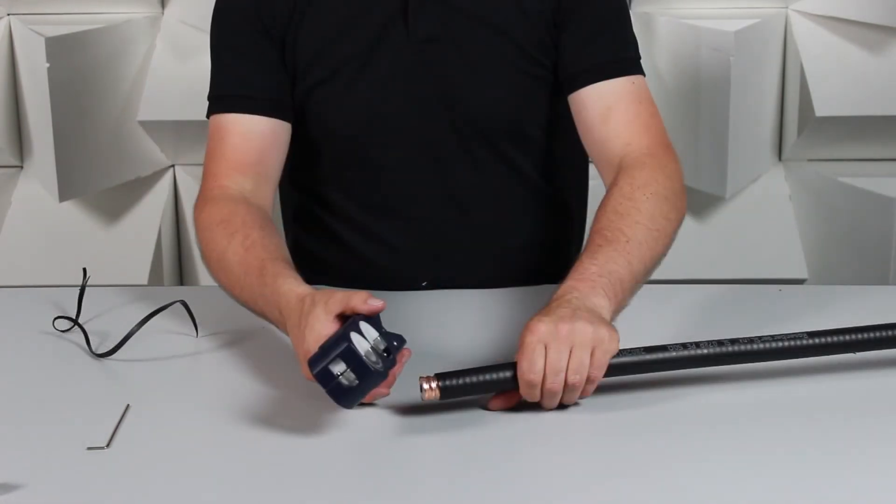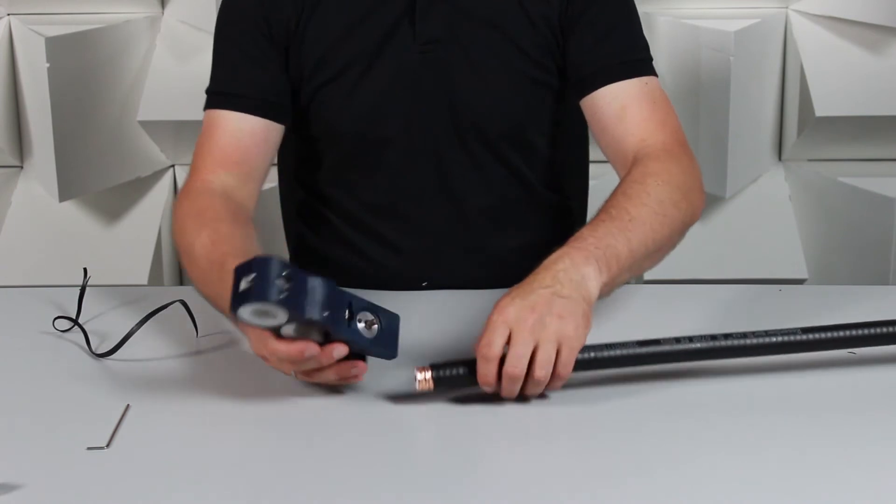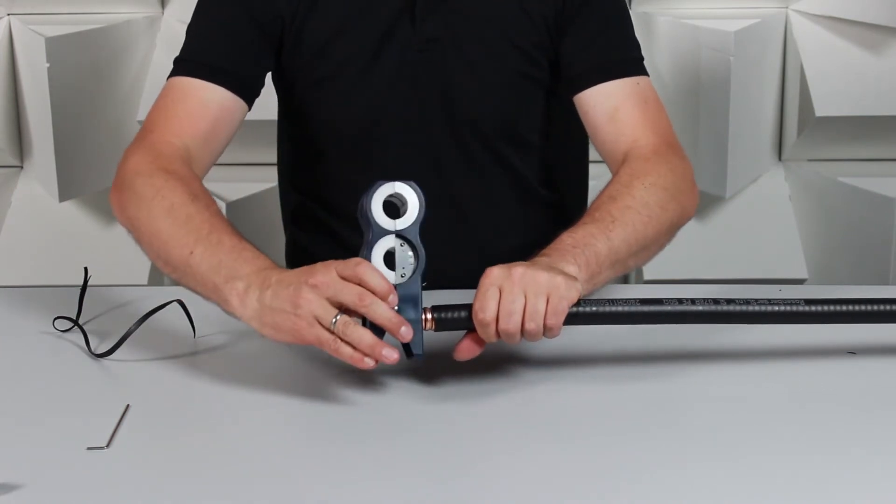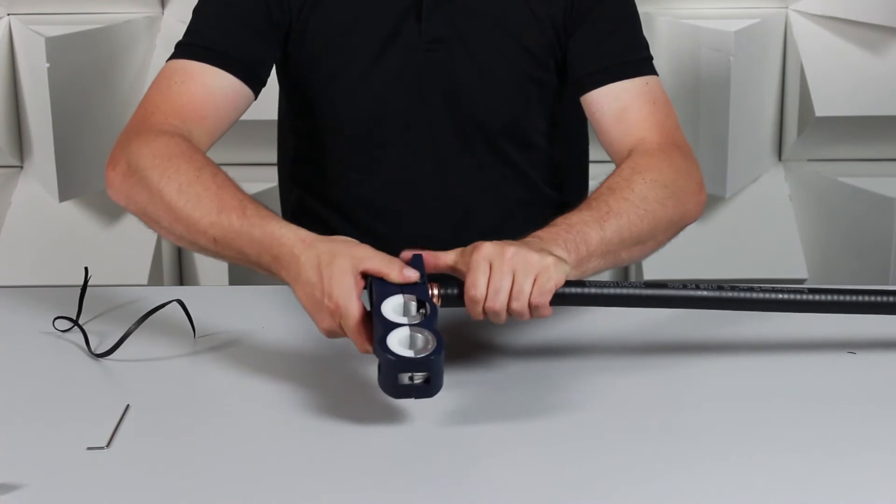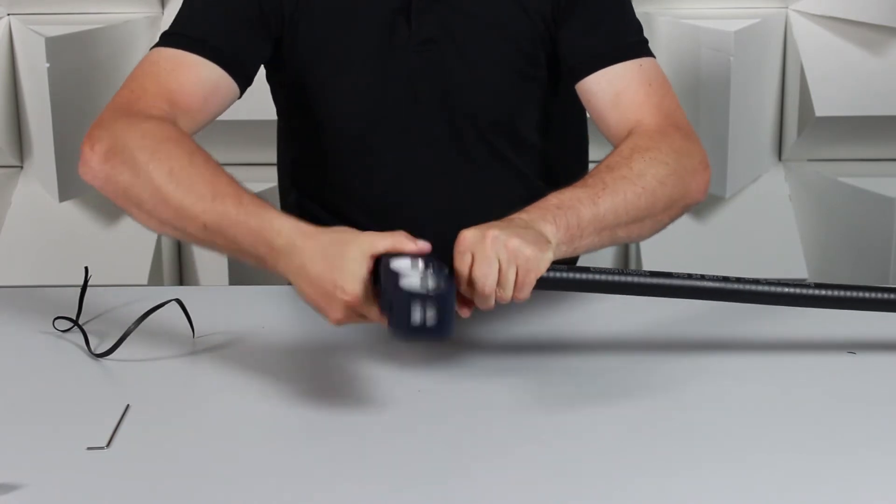For the final preparation of the cable, we have the integrated flaring tool. Position the cable on the tool and rotate. In this way, the outer contact is expanded to allow easy connector assembly.